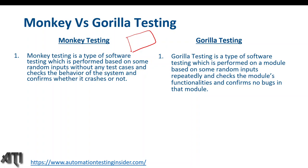Gorilla testing is a type of software testing performed on a module based on some random inputs repeatedly. As discussed, gorilla testing is performed on a particular module repeatedly. We perform repetitive test cases on the module and check the module's functionalities to confirm that everything works in the module.